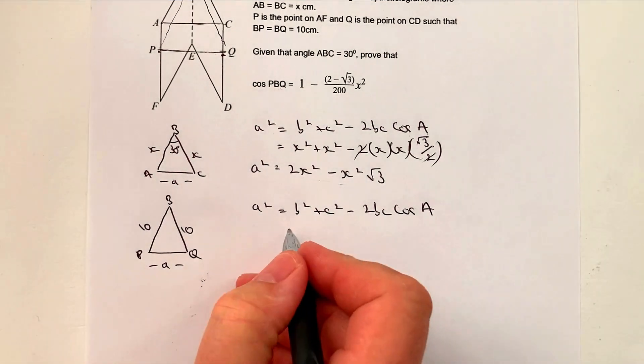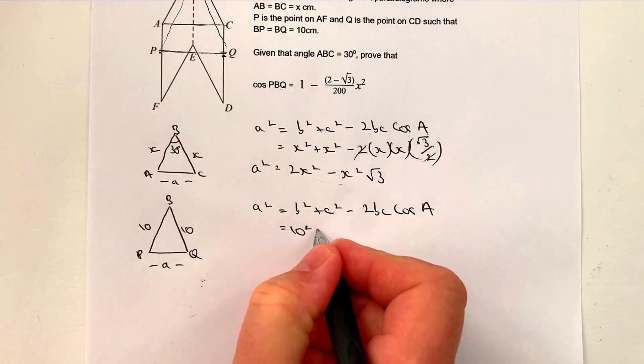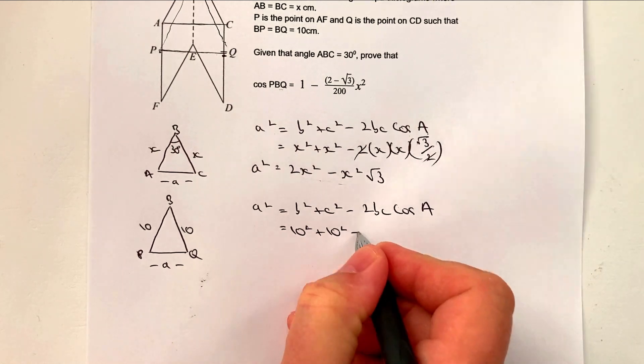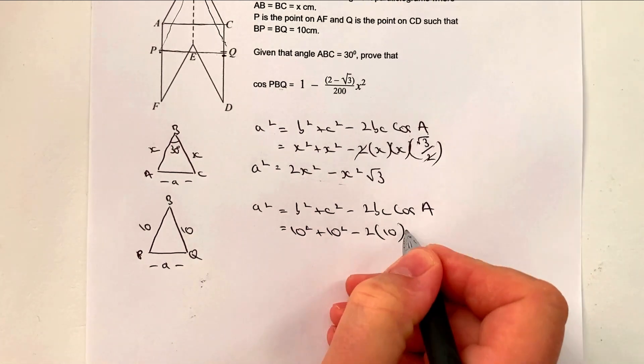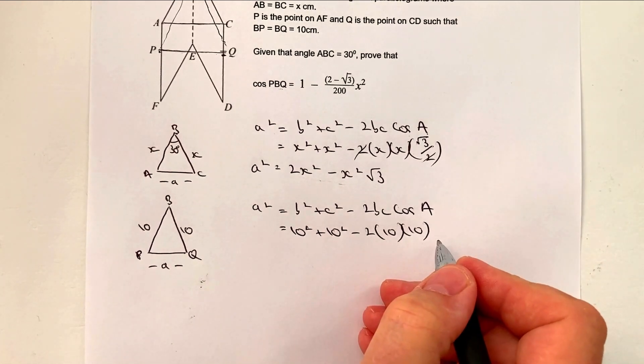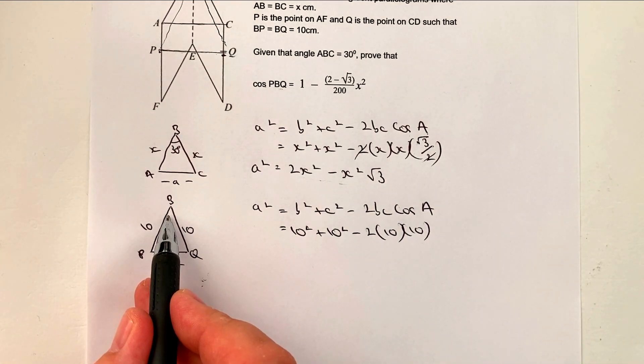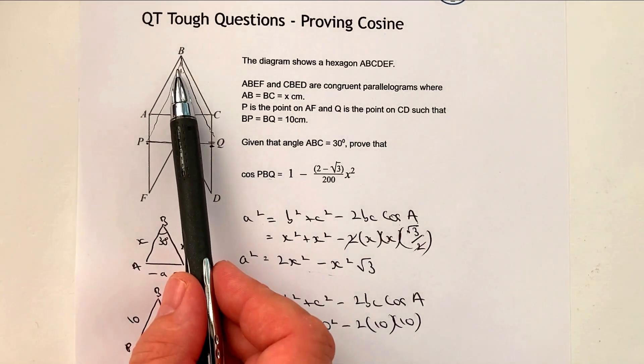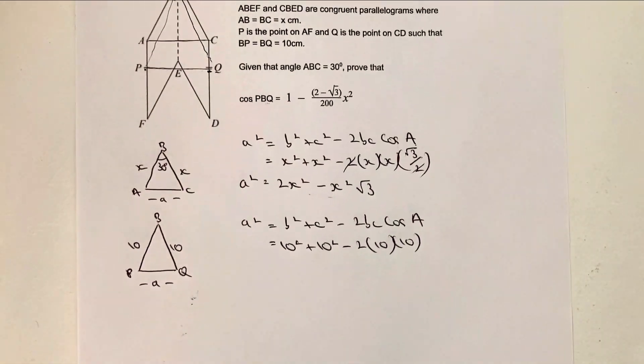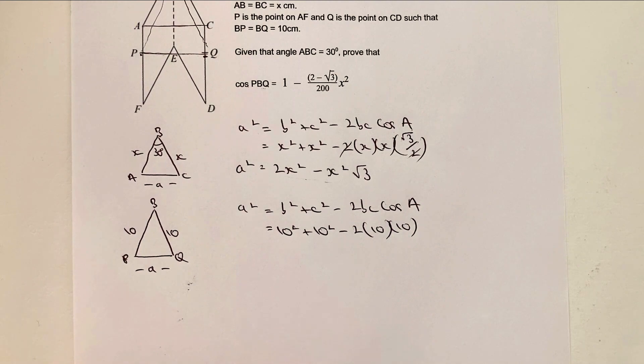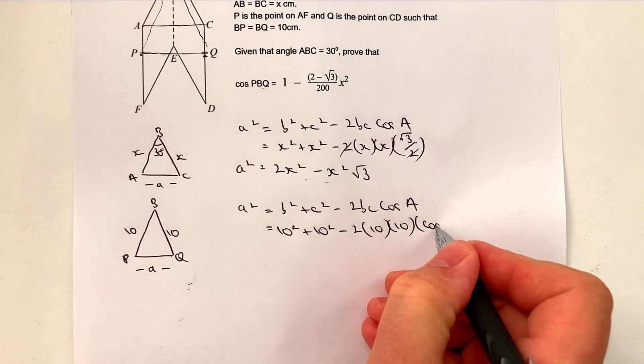Okay, so this time I've got b squared is 10 squared plus 10 squared minus 2 times 10 times 10. And again, I've got cosine A. But this time, unfortunately, I don't know this angle. It's this angle right at the very top here. I don't know what it is.